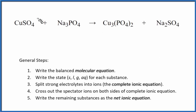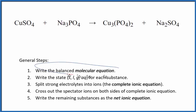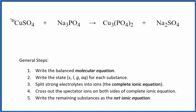In this video we'll balance the net ionic equation for copper 2 sulfate plus sodium phosphate. The first thing we need to do when balancing net ionic equations is balance the molecular equation. Here is the molecular equation and the coefficients are 3, 2, 1, and 3.